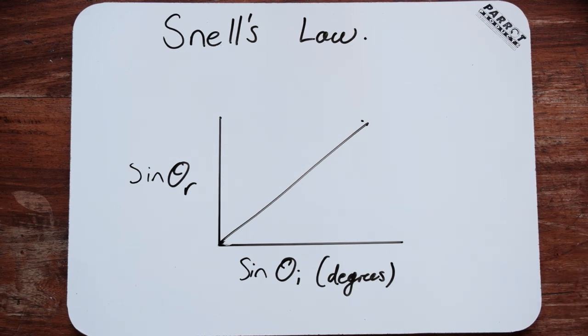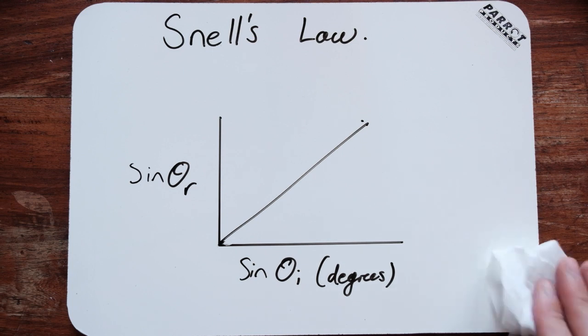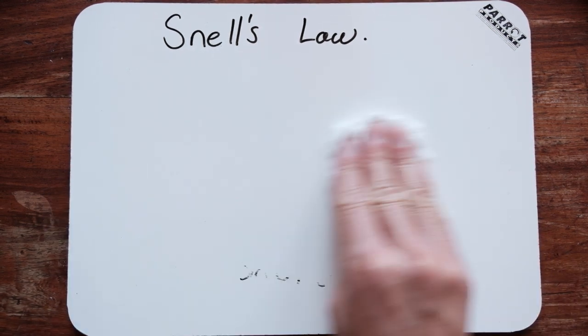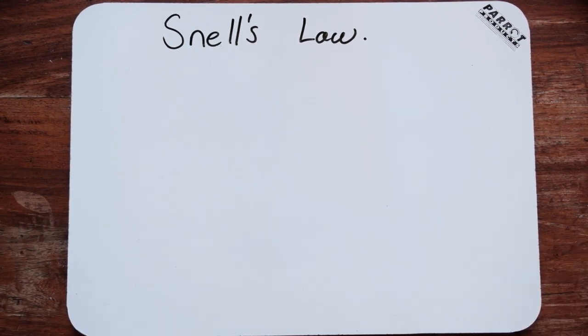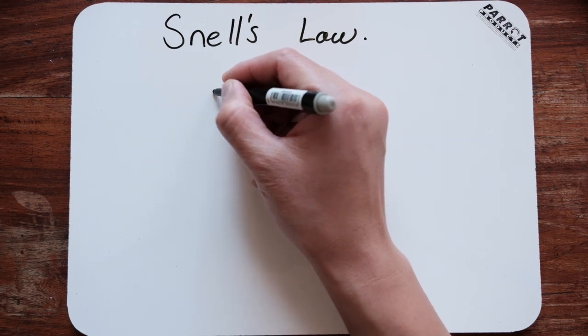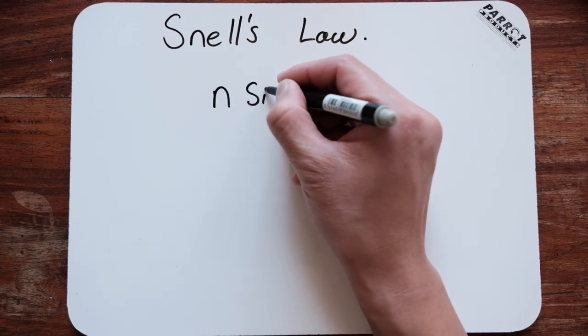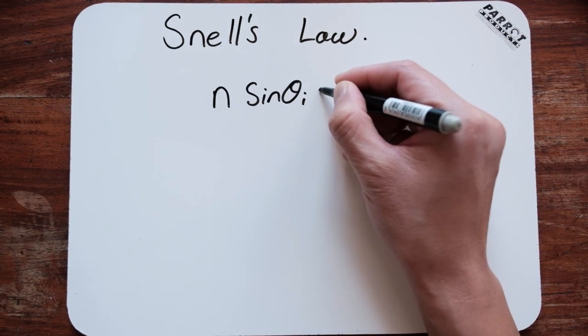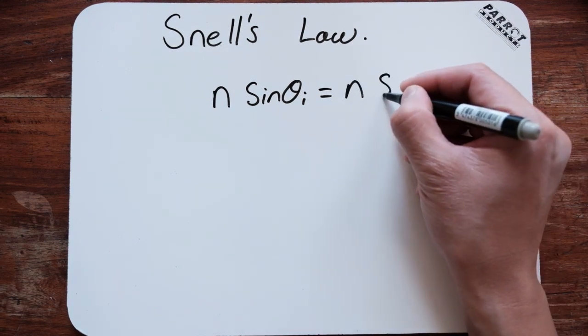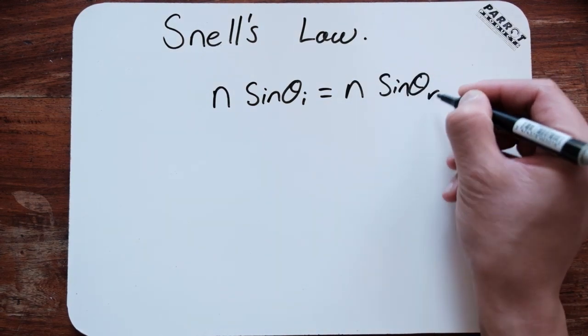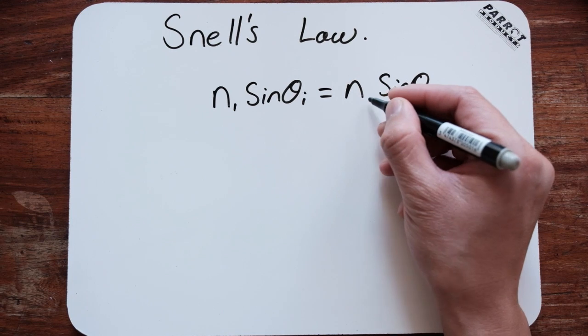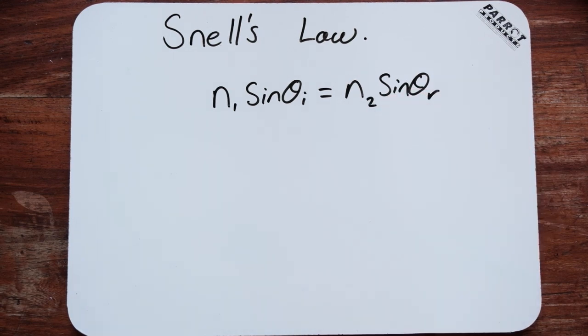Now, what is interesting about this is that, essentially, we can actually use an equation like this. So the equation for Snell's law is that n₁ sin θᵢ = n₂ sin θᵣ. So that's how you write it down.